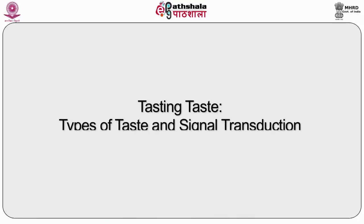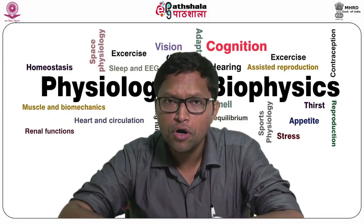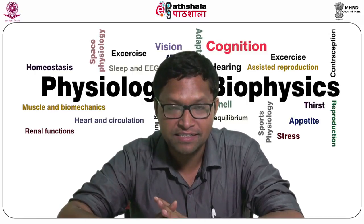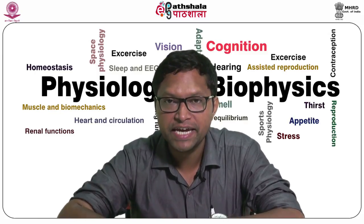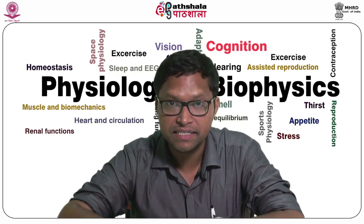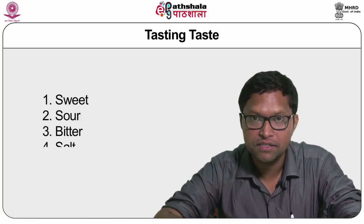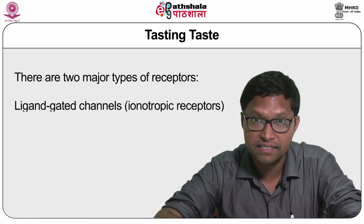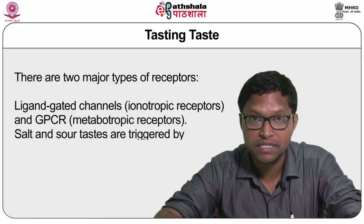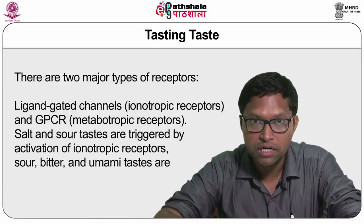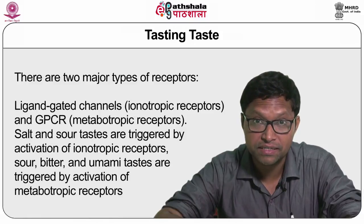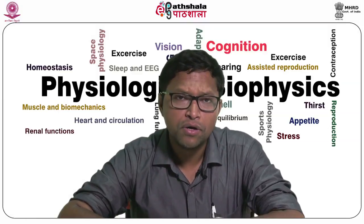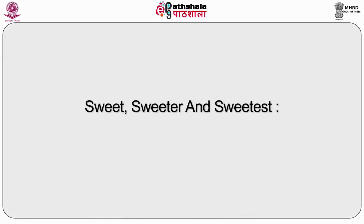Now let's talk about the types of taste and signal transduction. The basic tastes remain the same: sweet, sour, bitter, salt, and the fifth — umami. There are two major types of receptors: ligand-gated channels or ionotropic receptors, and G protein-coupled receptors or metabotropic receptors. Salt and sour tastes are triggered by activation of ionotropic receptors.